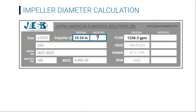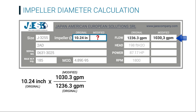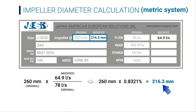In conclusion, we are going to calculate the pump impeller diameter. How much should the impeller diameter measure if we want to reach the modified flow rate value of 1030.3 GPM? This calculation is used in the case where the impeller is actually trimmed down to meet the new flow rate. We cancel out the GPM of this division to find the ratio, which we multiply by the original impeller diameter — 10.24 inches — to find 8.53 inches, or 260.3 millimeters.